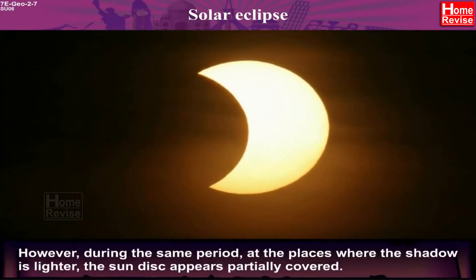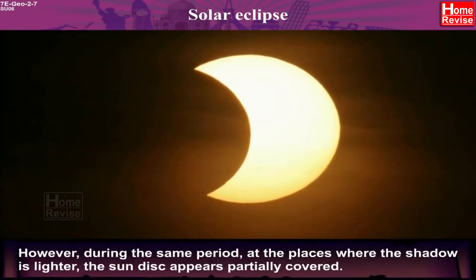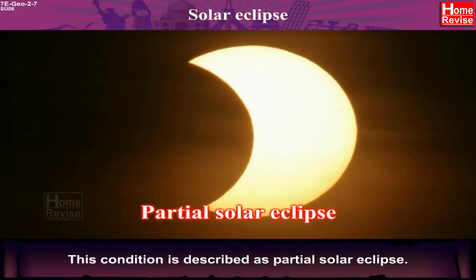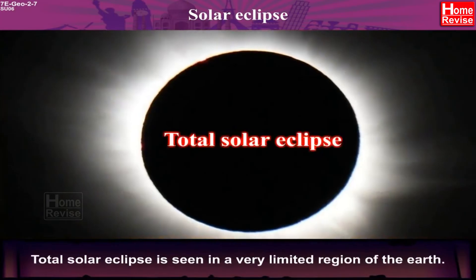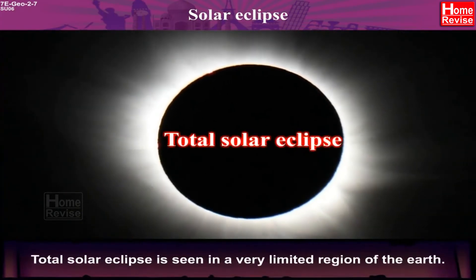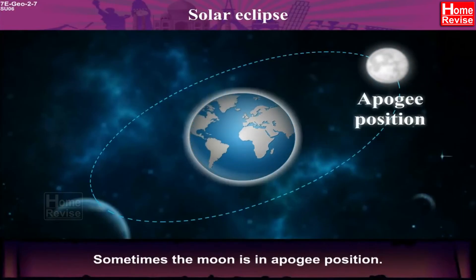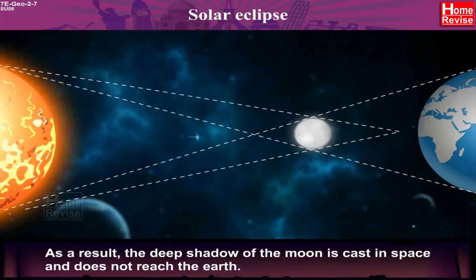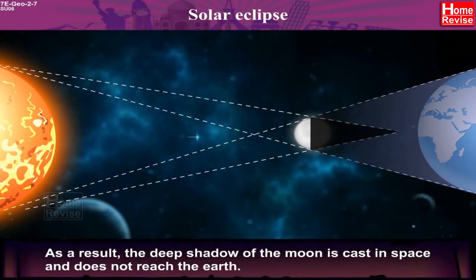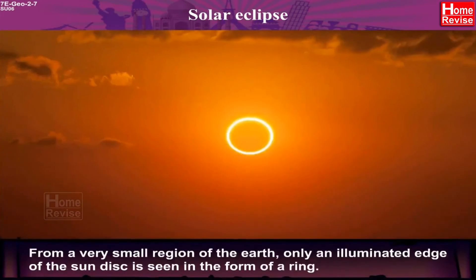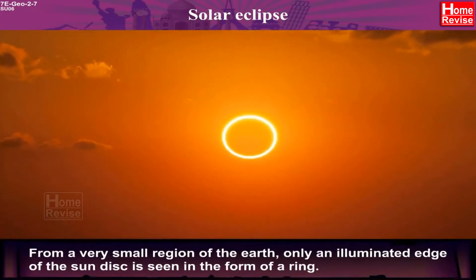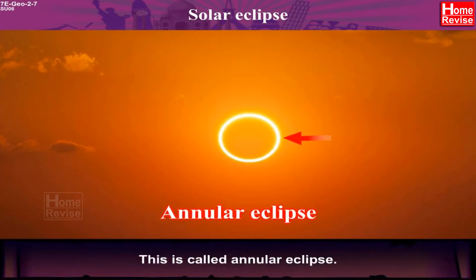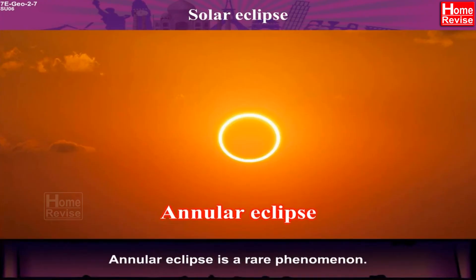However, during the same period, at the places where the shadow is lighter, the Sun disk appears partially covered. This condition is described as Partial Solar Eclipse. Total Solar Eclipse is seen in a very limited region of the Earth. Sometimes the Moon is in the apogee position, meaning it is at its farthest from the Earth. As a result, the deep shadow of the Moon is cast in space and does not reach the Earth. From a very small region of the Earth, only an illuminated edge of the Sun disk is seen in the form of a ring. This is called Annular Eclipse. Annular Eclipse is a rare phenomenon.